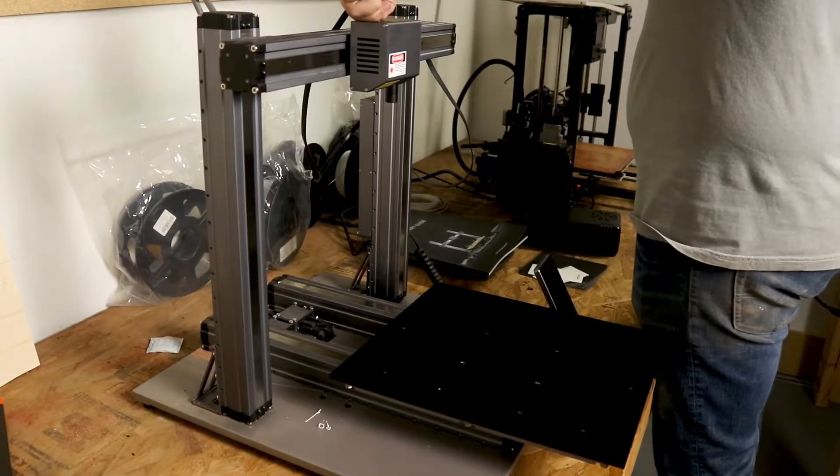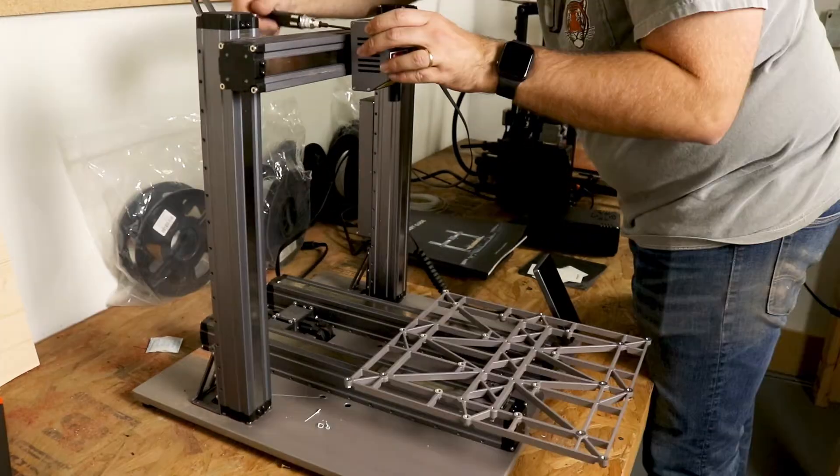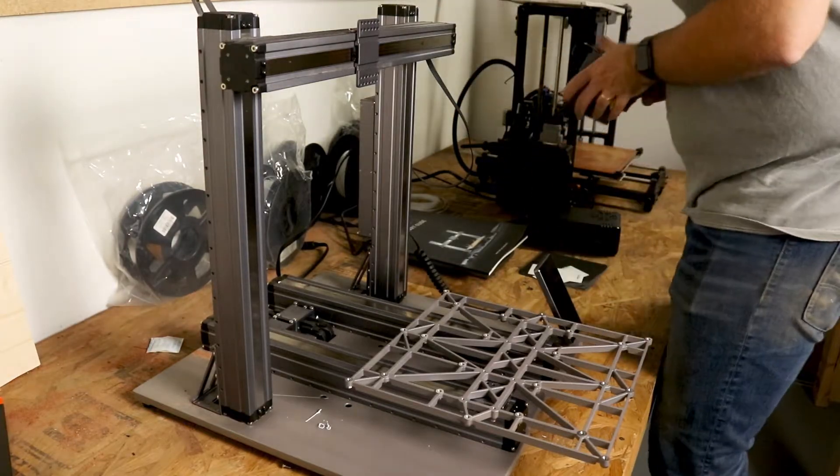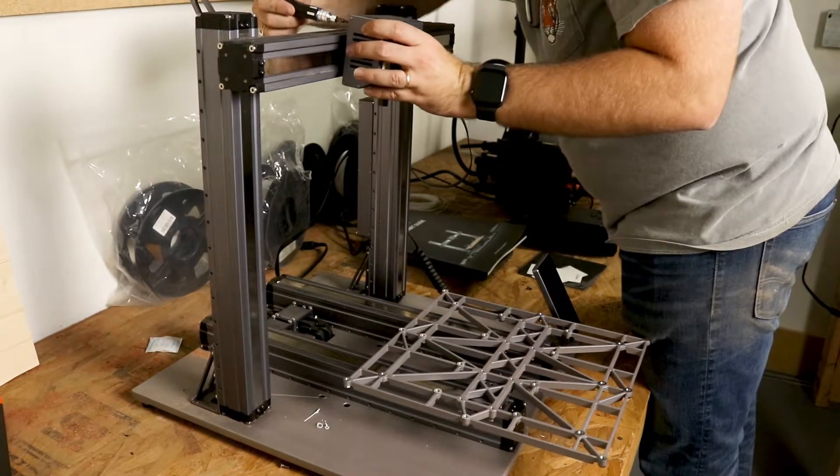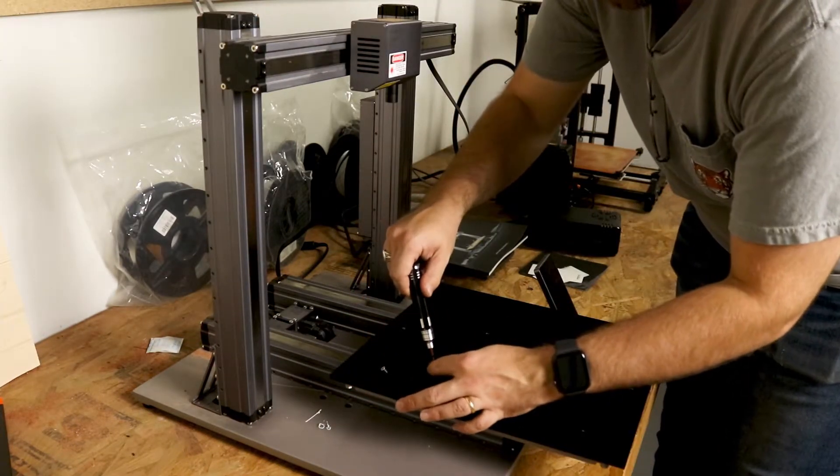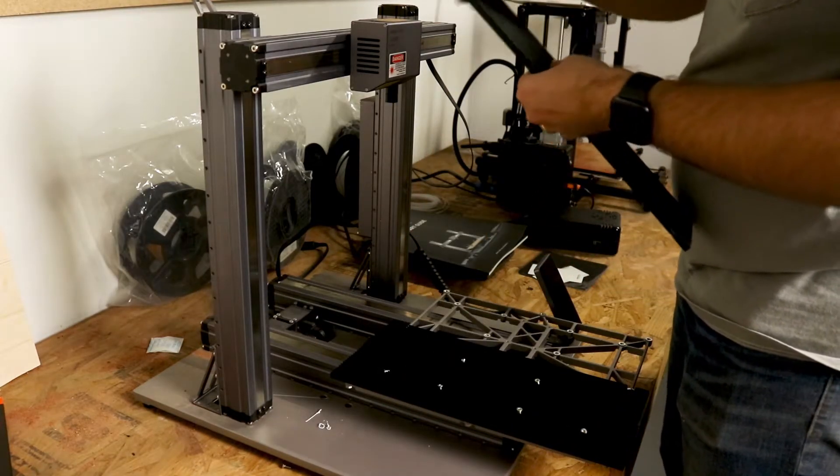Just like before we unplug our laser engraving module, we take our CNC head module, we go ahead and we take the laser engraving module off and replace it with the CNC routing head and then we go back down to the bed part of the Snapmaker. We undo all of our little screws and bolts, remove the heat sink sections of the bed,